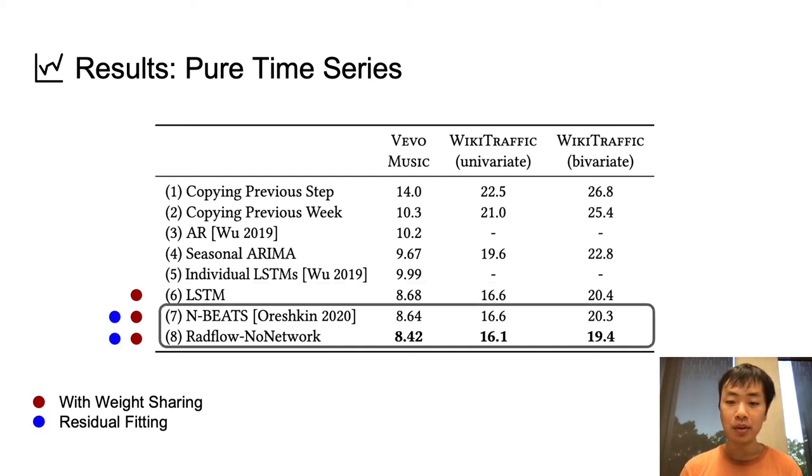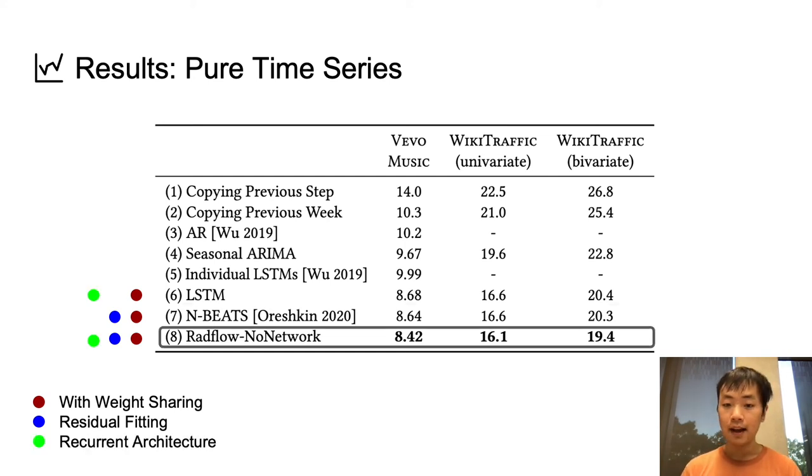In addition, both NBEATS and our RADflow model use residual fitting, where we can break the time series predictions into smaller parts, and having residual fittings also improves the performance. Finally, our RADflow model makes use of the recurrent structure of the LSTM, which allows us to outperform NBEATS the previous state-of-the-art in time series modeling. Intuitively, the recurrent structure allows us to better model the ordering of the time series.